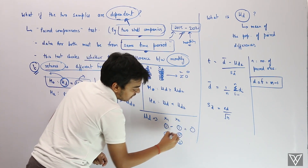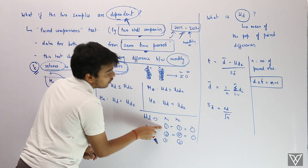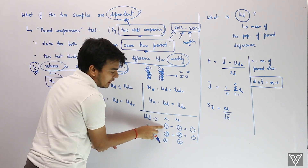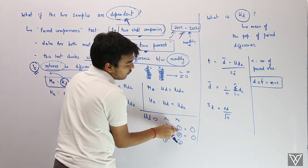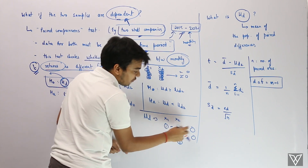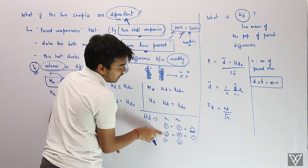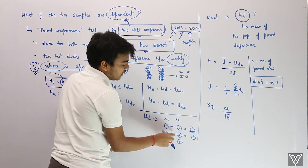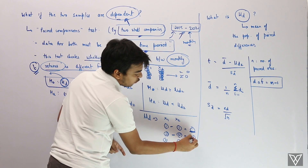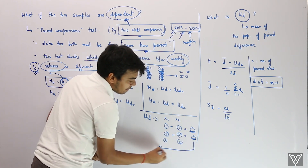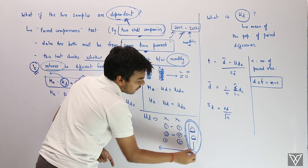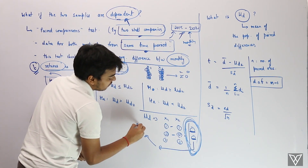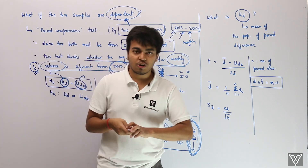The first difference is for January 2015 — you take the first company's return for January 2015 and subtract the second company's return for January 2015. That gives you the first paired difference. You do this for each corresponding time period across both series.